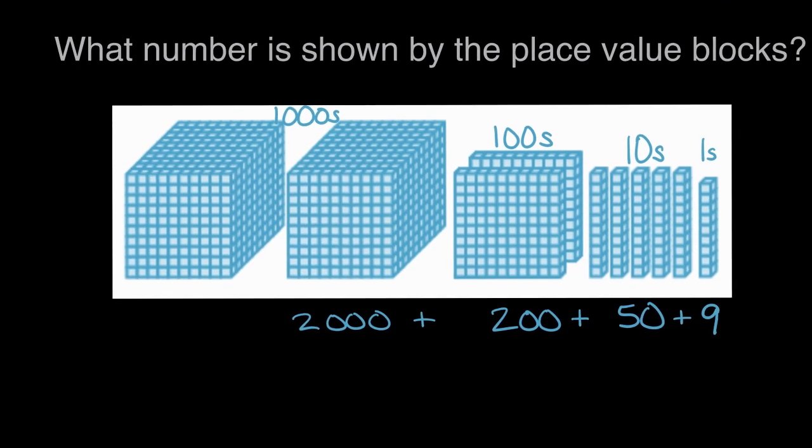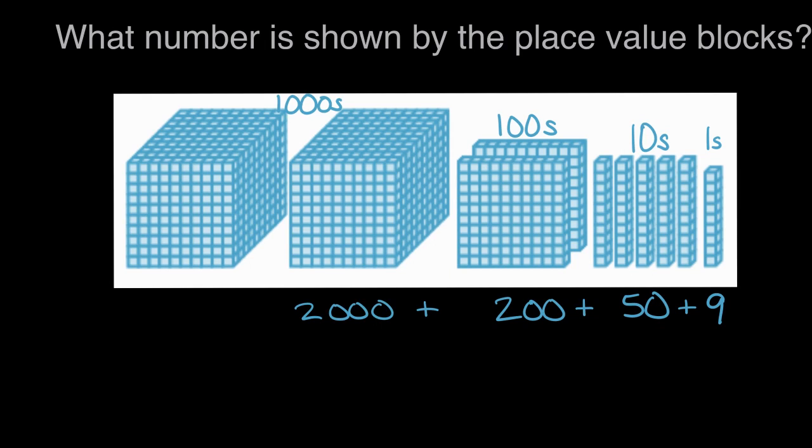Now zooming back out, we can look at all of the amounts we had. We had 2,000 blocks plus 200 more blocks, plus 50 more blocks, plus nine blocks. Or in total, we have 2,259 blocks.